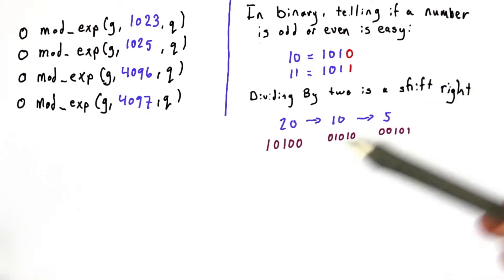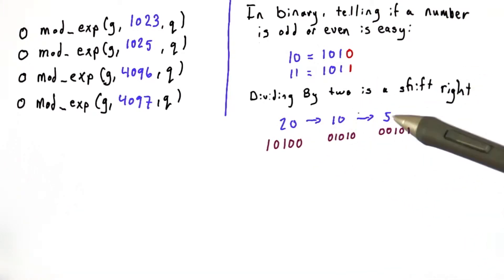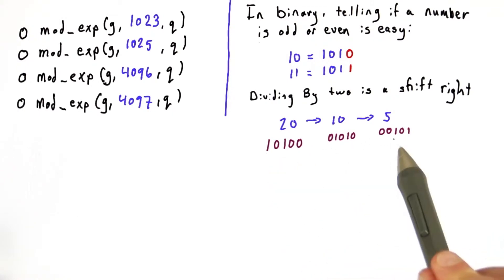And dividing by 2 is a shift right. For example, 20 to 10 to 5 is a shift and then another shift.